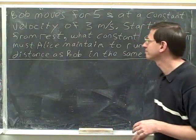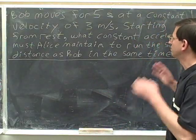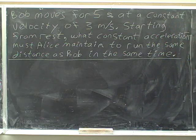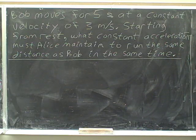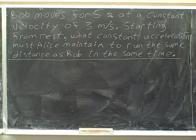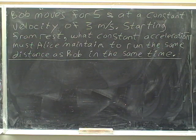Let's try another problem. Bob moves for five seconds at a constant velocity of three meters per second. Starting from rest, what constant acceleration must Alice maintain to run the same distance as Bob in the same time?